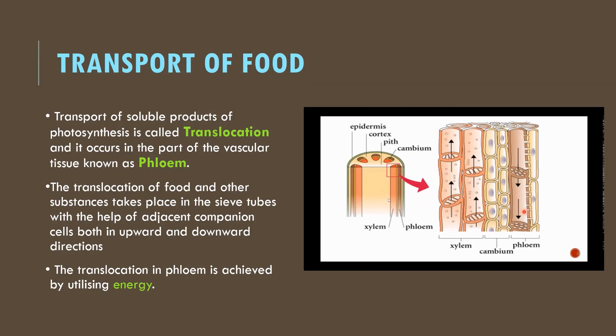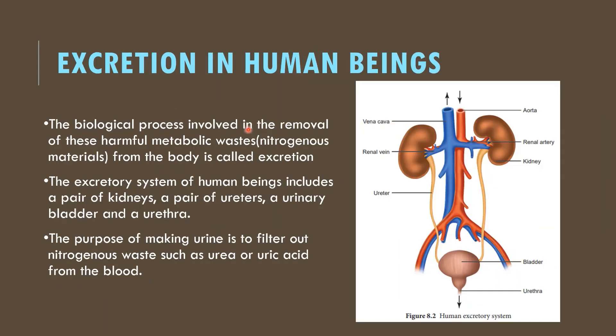In summary, with the help of vascular bundles — xylem and phloem — the translocation of food is by phloem and the movement of water is by xylem. Moving on to excretion in human beings: excretion is a process which involves removal of wastes from the blood, specifically nitrogenous wastes like urea and uric acid. These metabolic wastes must be removed from the blood, and this process is called excretion.